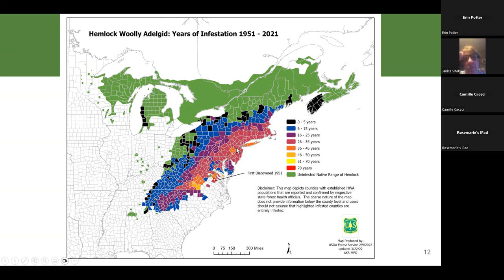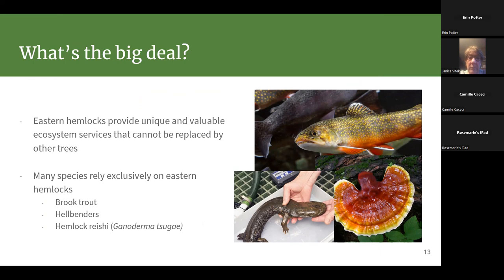HWA has been spreading throughout the eastern US for quite some time. Initially found in Henrico County, Virginia in 1951, they spread first toward Long Island and New York City, and most recently have been found farther north, proceeding toward Maine and south toward Georgia. A lot of our counties in the Finger Lakes region have had them for six to fifteen years, and they have caused considerable damage in that time.